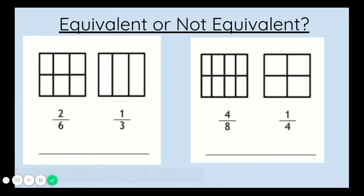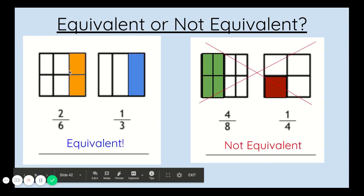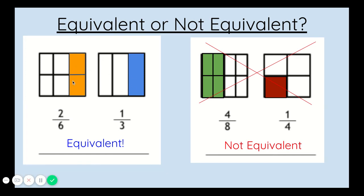Another practice problem from your packet. You have to find out whether some of these fractions are equivalent or not equivalent. On this example, two sixths is equivalent to one third. When you shade in those two fractions, they show the same amount.